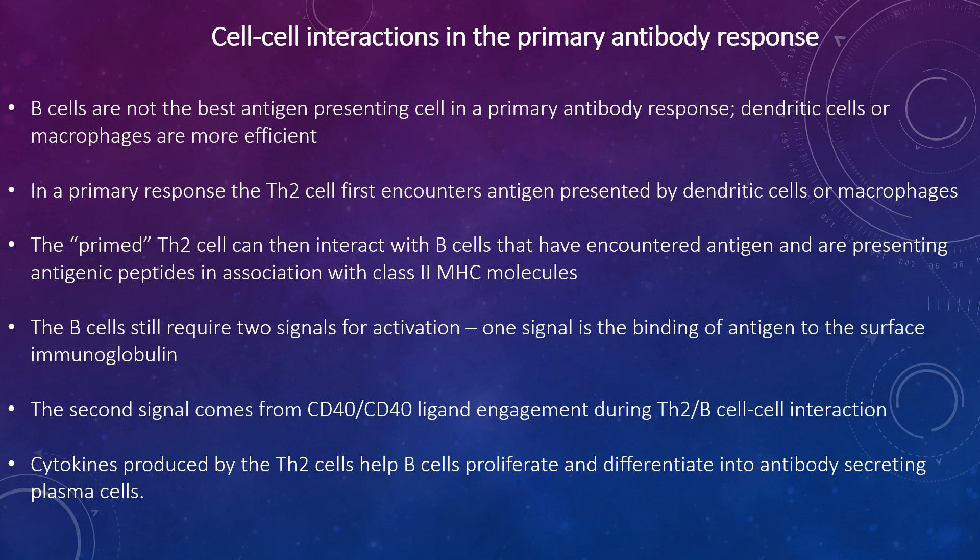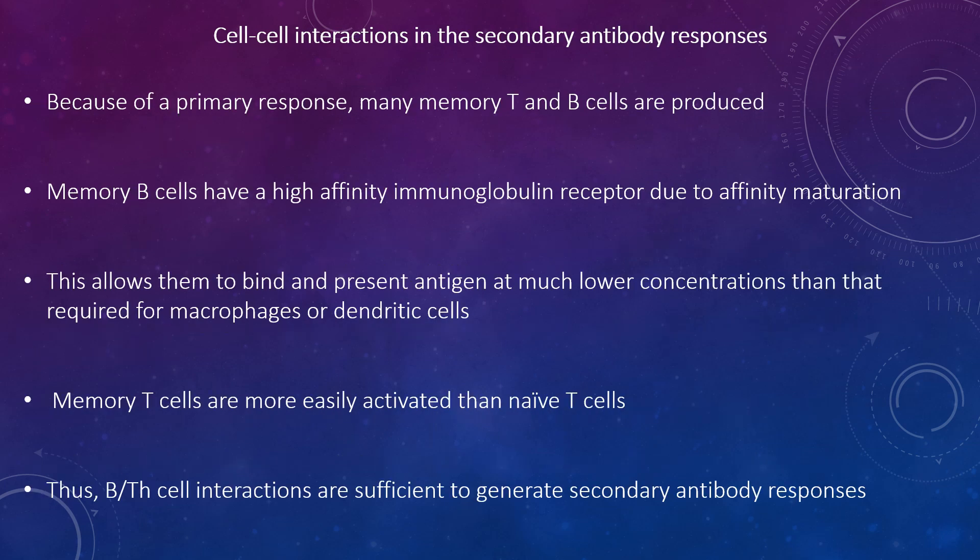In addition, cytokines produced by Th2 cells help B cells proliferate and differentiate into antibody-secreting plasma cells. As a consequence of a primary response, many memory T and B cells are produced. Memory B cells have a high-affinity immunoglobulin receptor due to affinity maturation, which allows them to bind and present antigens at much lower concentrations than required for macrophages or dendritic cells. Memory T cells are more easily activated than naive T cells.